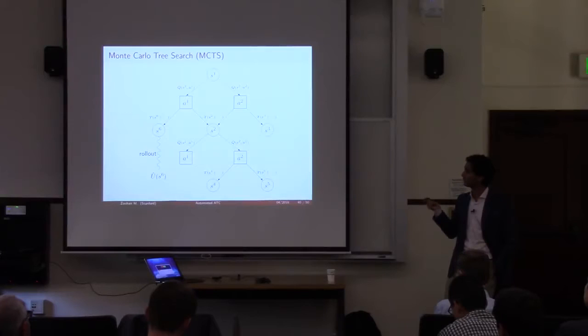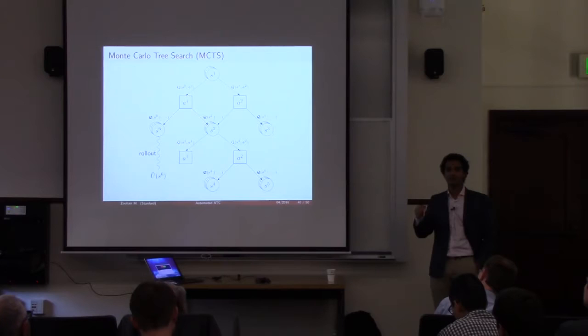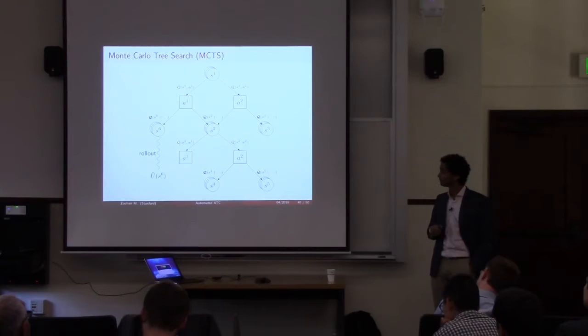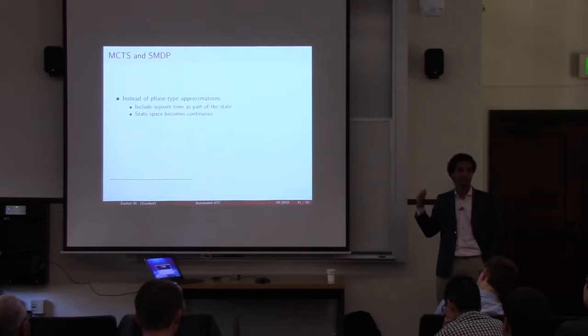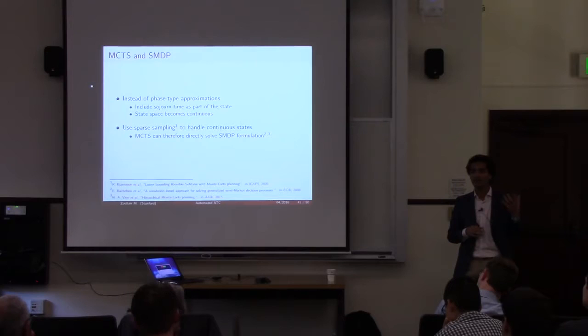This is what we call vanilla Monte Carlo Tree Search. I adapted it to my problem — specifically we have continuous time sojourn distributions and factored states. This allows us to scale the problem much better. It works so well that we can actually include continuous variables, namely the time, as part of the state. That allows us to solve the semi-Markov problem without having to rely on phase-type distributions.